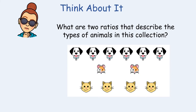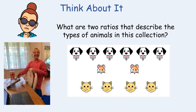Our first 'think about it' this week: there's an image on your screen and we are to describe it using two ratios. What are two ratios that describe the types of animals in this collection? I asked my bonus son Charlie — he's in third grade — and here's what he said: there is a ratio of six to twelve animals. The six represents the dogs, and twelve represents the dogs, hamsters, and cats all combined.